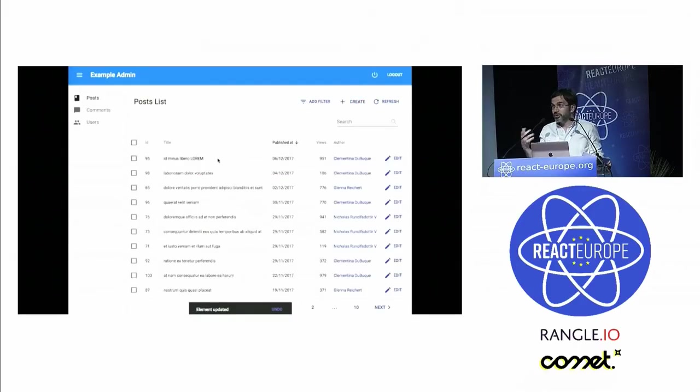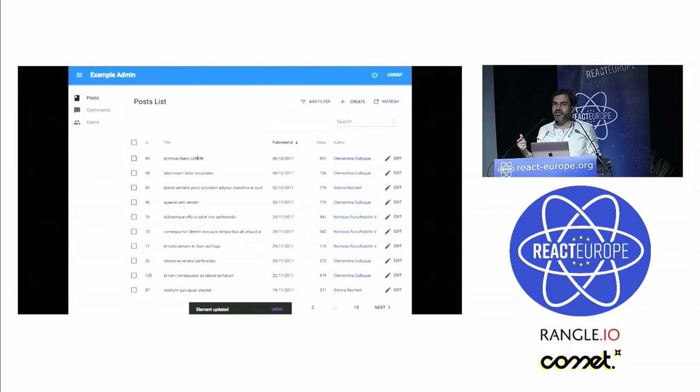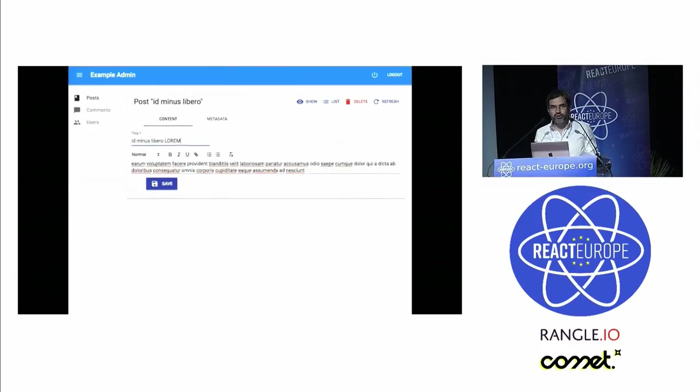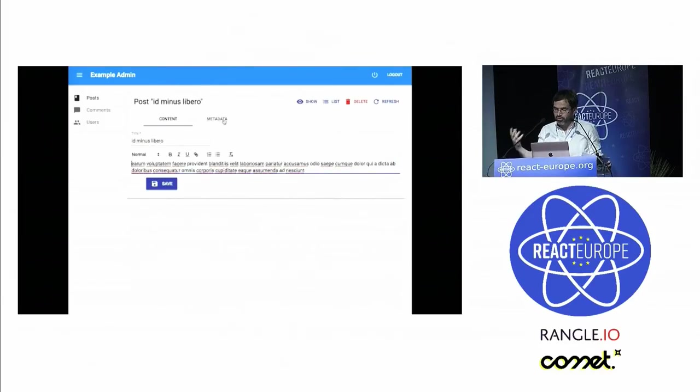When the user updates data on the interface, it's immediately updated in the UI, but the updated data is sent to the server only after the undo delay expires. And when the server responds with the updated data, nothing changes in the UI because it's already up to date. So that provides super fast interactions.